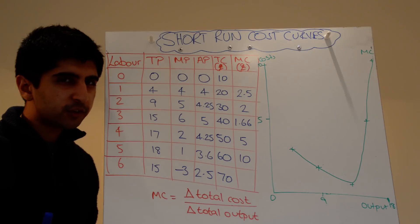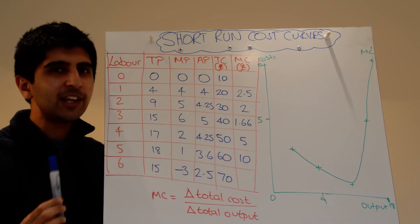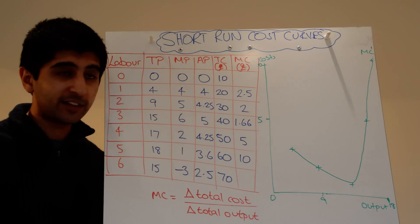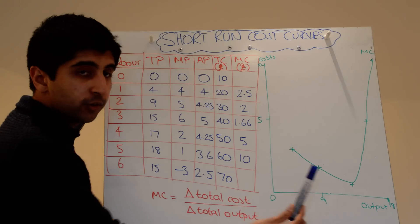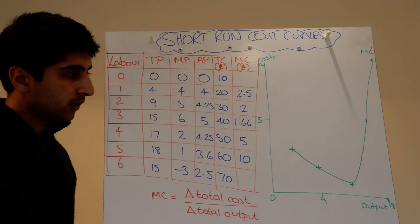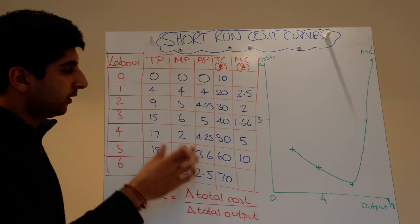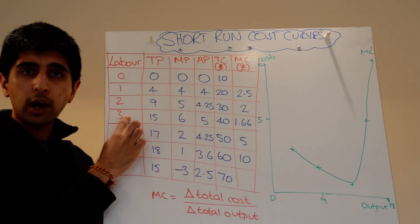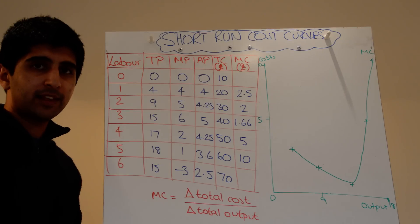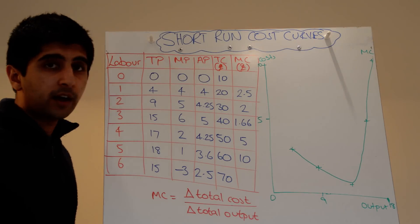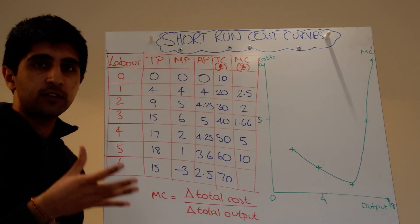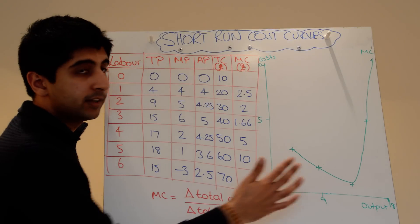The beauty of the marginal cost curve is we can explain its shape using the law of diminishing returns — it's a great law because we can explain so much from it. Initially we have marginal gains: workers specialise from round to round, and as we hire more workers, the other workers could specialise within tasks to get better. At the same time we have underutilised land and capital, so as we hire workers they can utilise those factors of production better. So we get marginal gains initially.